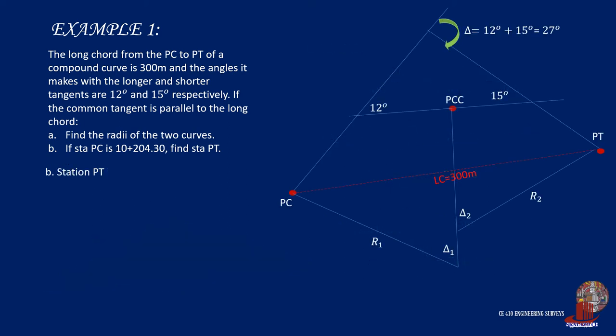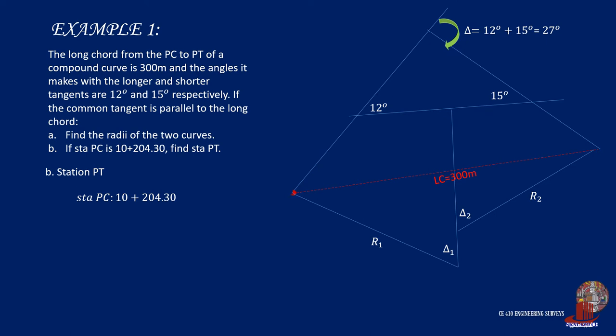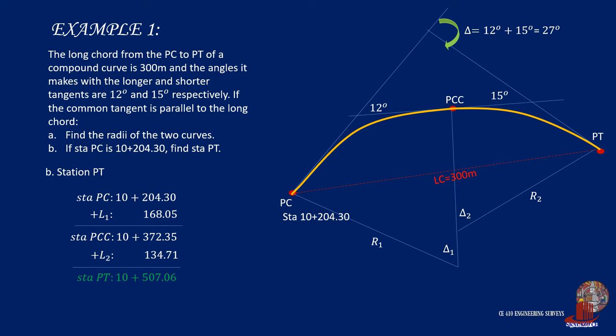For station PT, given station PC, we need the length of the curves. From the formula, L only needs radius and central angle. L1 equals 802.36 times 12 degrees times 2 pi over 360 degrees, giving 168.05 meters. L2 is solved similarly, yielding 134.71 meters. Start from PC with station 10 plus 204.3, add the length of the first curve which is 168.05, and we get station PCC as 10 plus 372.35. Then add the length of the second curve, 134.71 meters, which gives station PT as 10 plus 507.06.